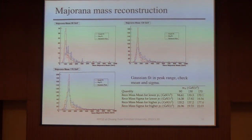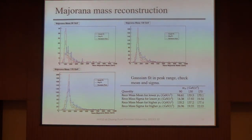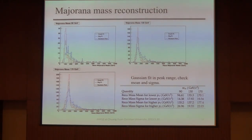At the beginning, when we started this research in 2008, we planned for 14 TeV center-of-mass energy and a luminosity of 10 to the 33 per square centimeter per second. But eventually we only achieved 7 TeV and 10 to the 32, so we did not have enough data to perform the mass reconstruction.